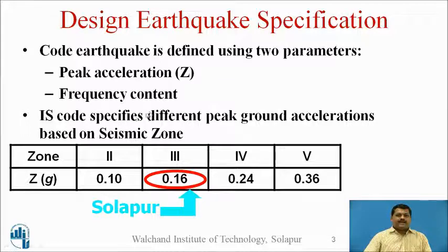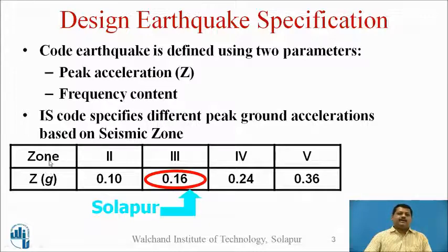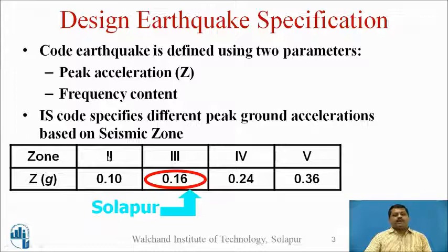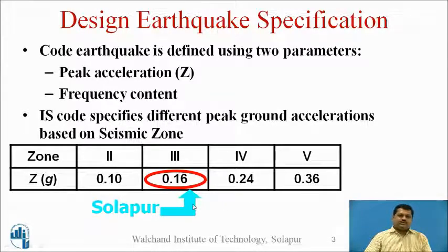IS code specifies different peak ground accelerations based on the seismic zone. Our country is divided into four zones. The seismic zone map of India is shown in IS 1893. The zones are 2, 3, 4, and 5. Zone 1 was there but it was removed in the IS revision and it directly starts from zone 2. These are the zone factors for these four zones. Our Solapur city belongs to zone 3, so the zone factor for Solapur city is 0.16.